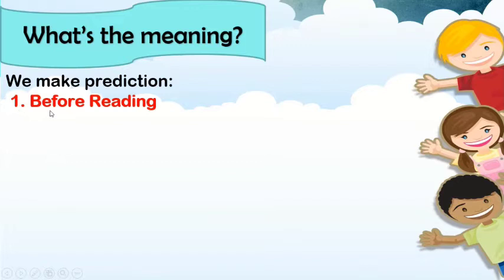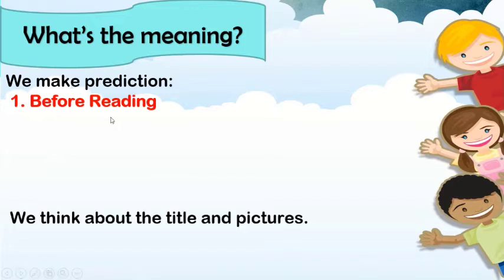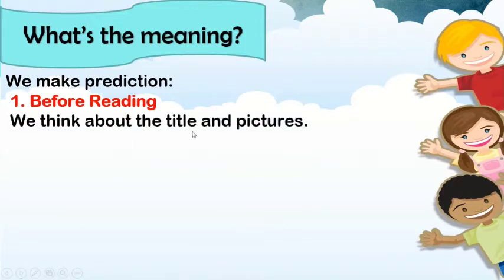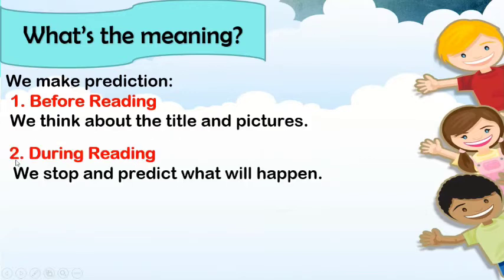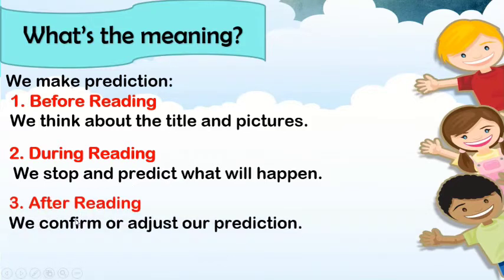Number one, before reading: we think about the title and pictures. Number two, during reading: we stop and predict what will happen. Then number three, after reading: we confirm or adjust our prediction. That's how we predict.